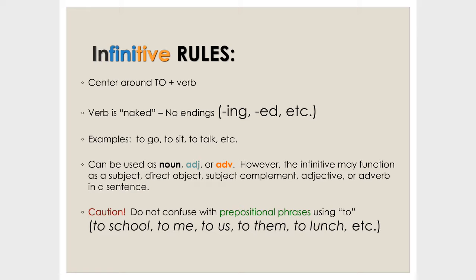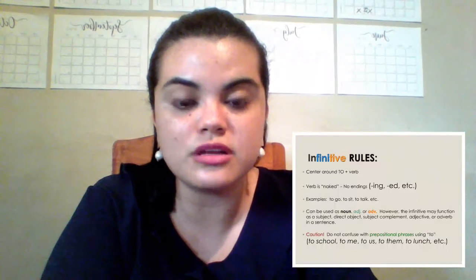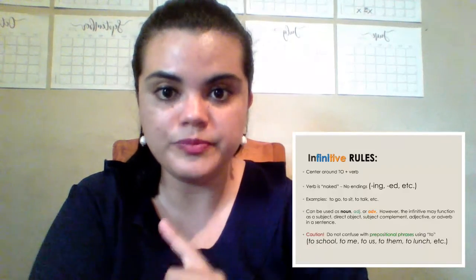'To' plus the verb in infinitive can be used as a noun, an adjective, or an adverb. The infinitive may function as a subject, a direct object, a subject complement, an adjective, or an adverb in a sentence. Please be careful: do not confuse infinitives with prepositional phrases. Prepositional phrases mainly use a noun after the word 'to' — for example: to school, to me, to us, to them, to lunch. In infinitives, we always use 'to' plus a verb in infinitive.